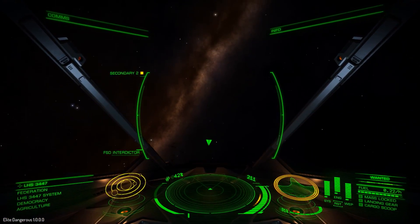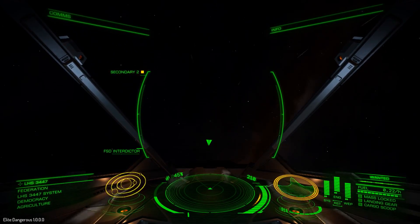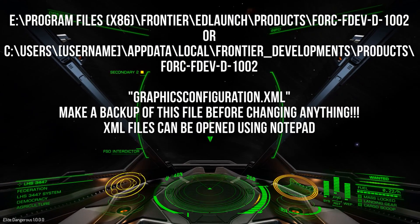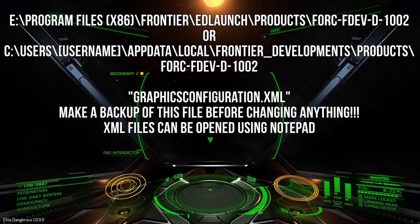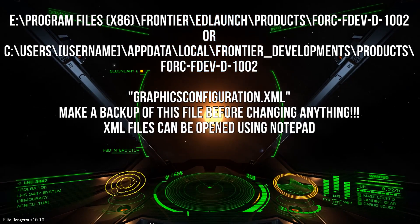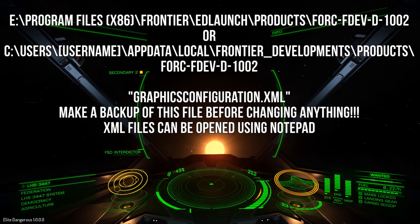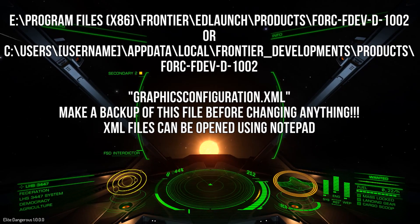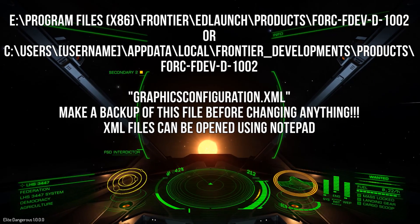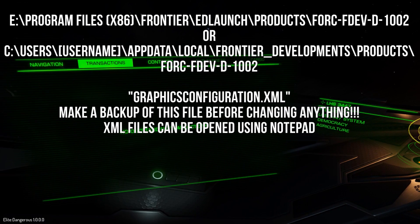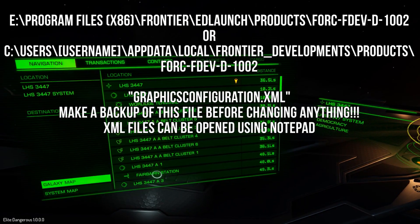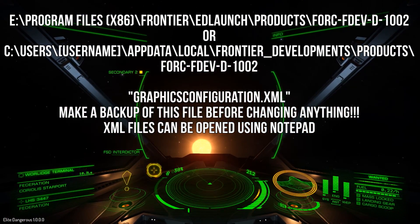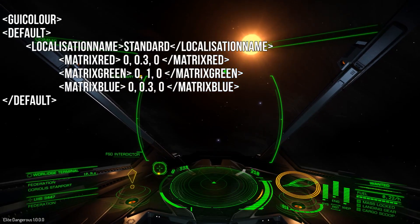First thing first, you want to find a file called GraphicsConfiguration — it's a .xml file and it's located at the installation directory. I'm going to put the directory name on the screen right now as an annotation. There is an alternative location that it could be at if you can't find it in the installation directory, but it should be at either one. So look for this GraphicsConfiguration.xml, and once you've found that you need to find a section called GUI color.